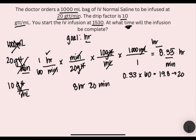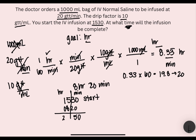So if we start at 3:30, which is 1530, and we add 8 hours and 20 minutes — I'm separating it with hours on one side and minutes on the other side. I add my minutes together: 50 minutes. I add my hours together: that's 2350. And that is your end time.